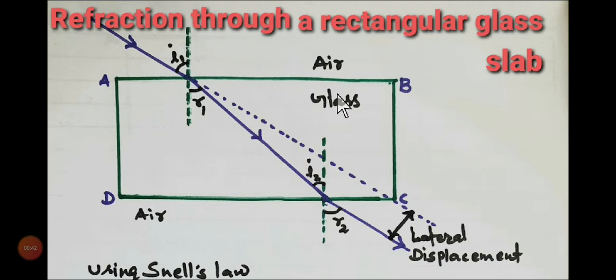Glass is the denser medium and air is the rarer medium here. So the speed of light decreases. This is the reason why the ray bends towards the normal.